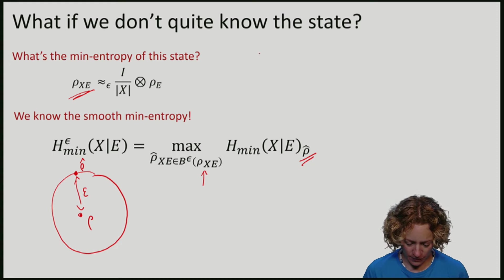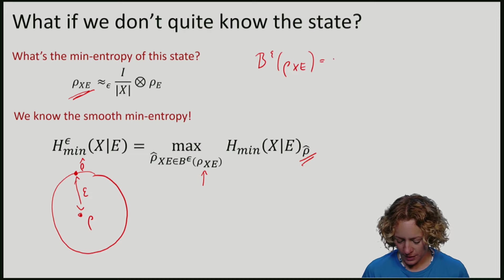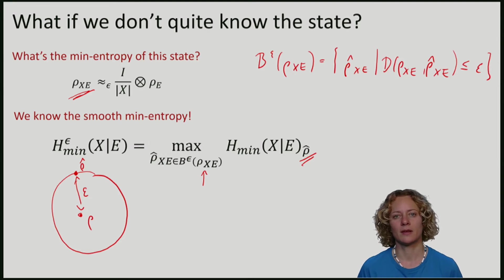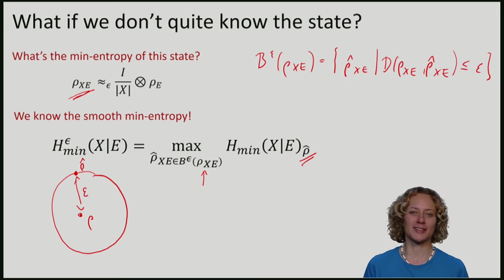This epsilon ball can be defined in terms of the trace distance. I'm interested in states, rho hat, such that the trace distance between rho and rho hat is not larger than epsilon. In the literature, you will also often find this quantity defined in terms of a purified distance, sometimes also a fidelity. But it's very easy to translate one into the other. Here we will use the trace distance.